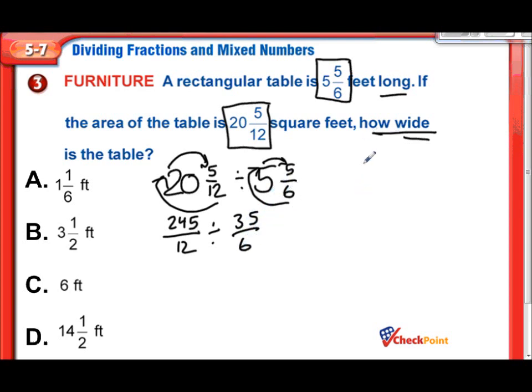Now we can do our keep, change, flip. So we keep this first fraction the same, 245 over 12. Instead of division, multiplying. And instead of 35 over 6, now it's 6 over 35. I'm looking diagonally, and both 12 and 6 can be divided by 6. 12 divided by 6 is 2, 6 divided by 6 is 1. And now the other way, looks like I can divide both of these by 5. 35 divided by 5 is 7, and 245 divided by 5 is 49.